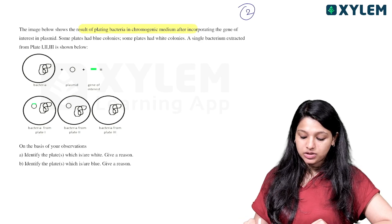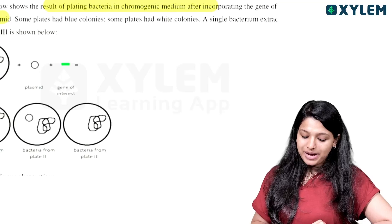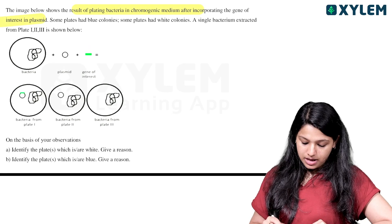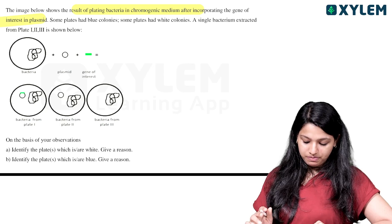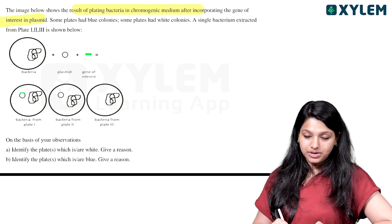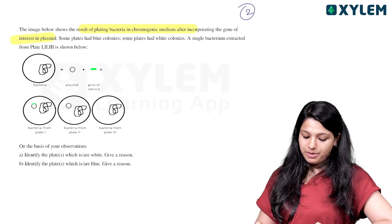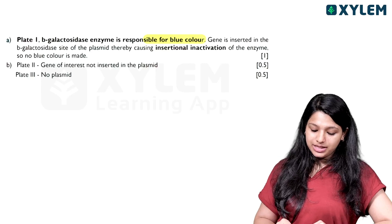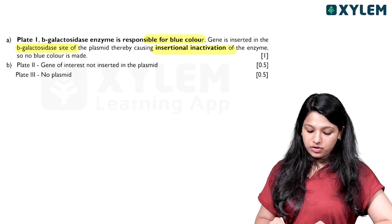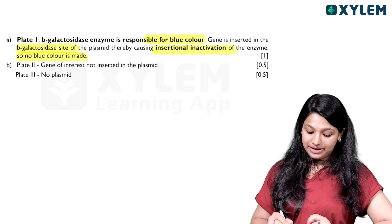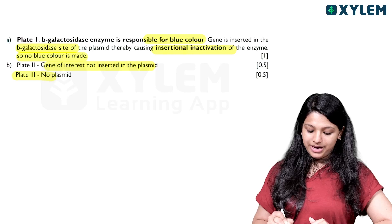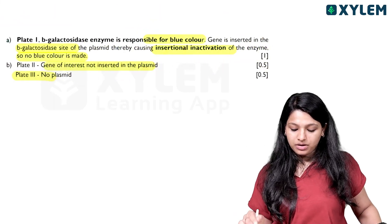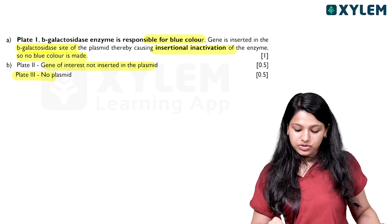The image shows the result of plating bacteria on chromogenic medium after incorporating the gene of interest into a plasmid. Some plates had blue colonies, some had white colonies. A single bacterium from plates one, two, and three is shown below. When the gene of interest is inserted into the beta-galactosidase gene in the plasmid, it causes insertion inactivation of the enzyme, so no blue color is made. If the gene is not inserted, the blue color is produced.